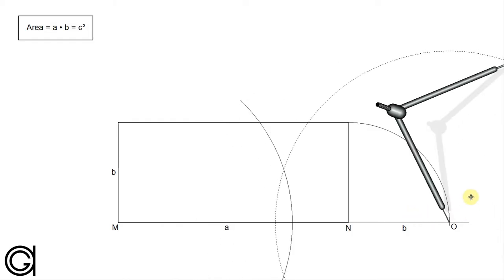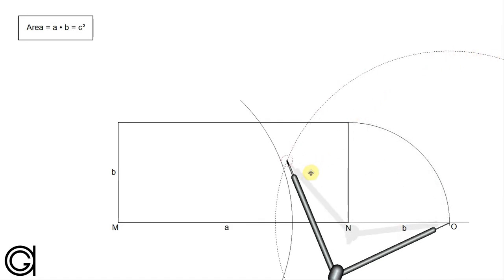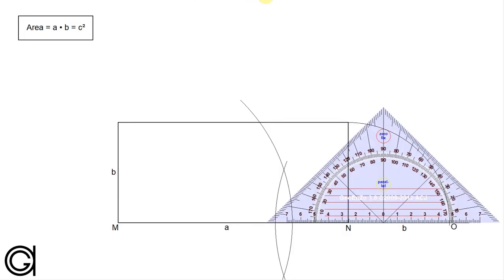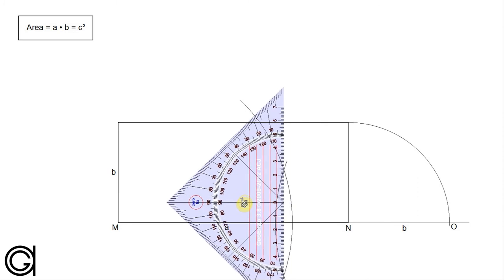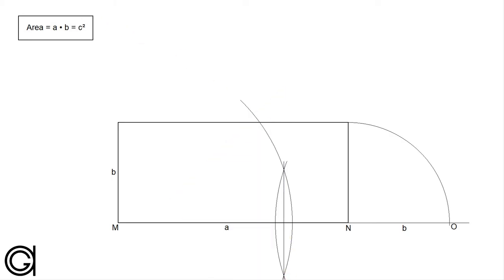Now with the same radius and setting the compass on point o, we are going to scribe another arc until it cuts our previously drawn arc at two points. With our ruler we draw a line joining these two intersections, and where it cuts the line segment m o, this is the midpoint, which we will call p.